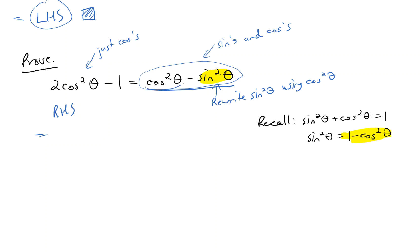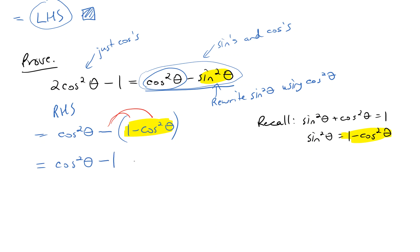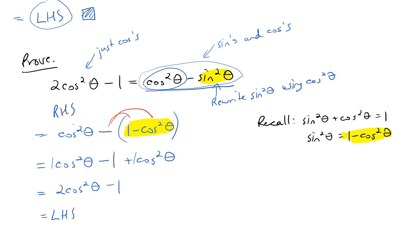That gives cosine squared theta minus the quantity 1 minus cosine squared theta, but we must subtract the entire expression. Distributing the negative gives cosine squared theta minus 1 plus cosine squared theta. Combining like terms: 2 cosine squared theta minus 1, which is the left-hand side. The right-hand side equals the left-hand side — the proof is done.